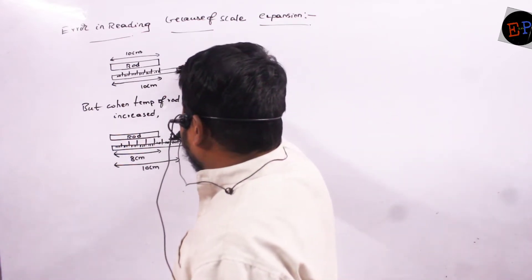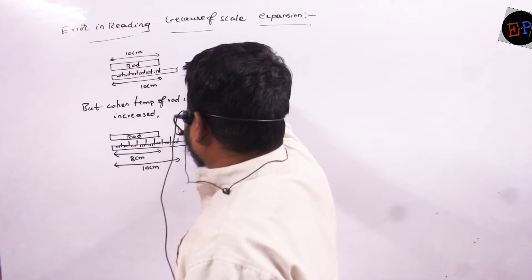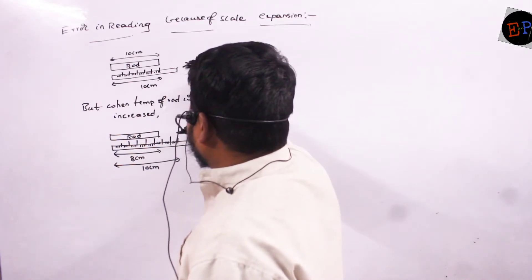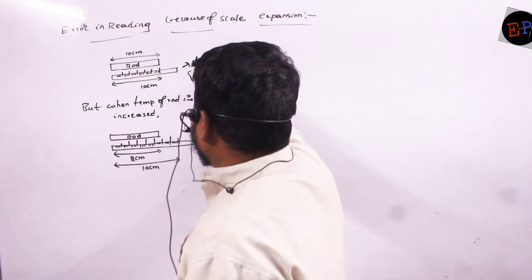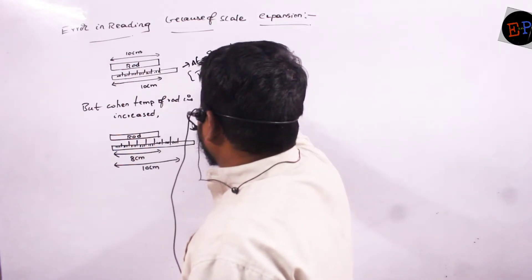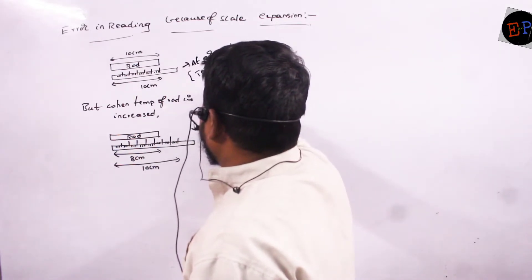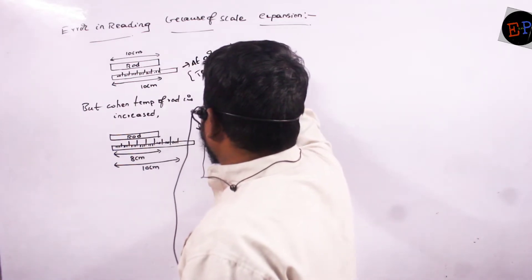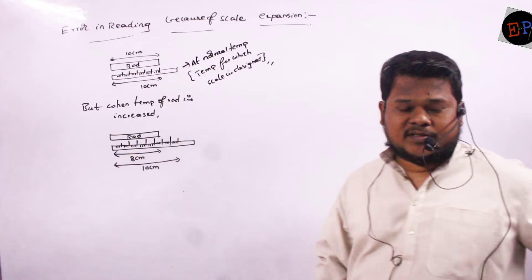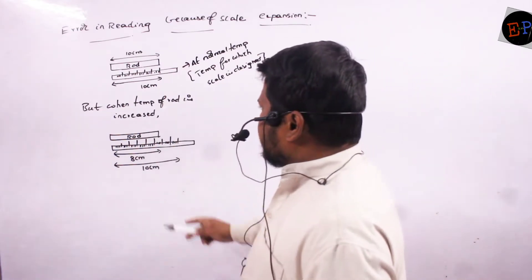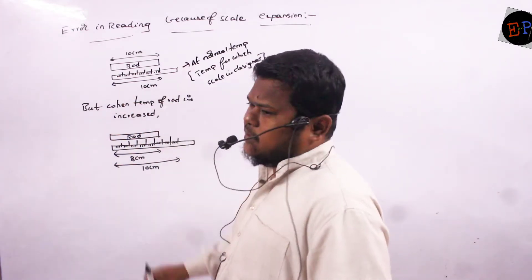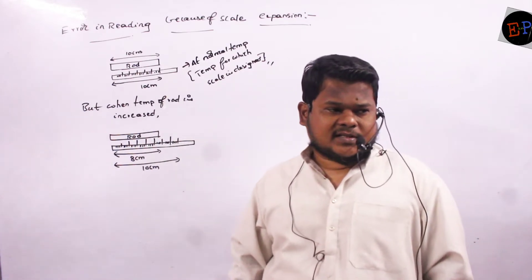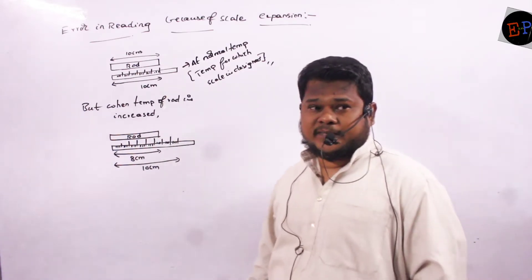This is at normal temperature — normal temperature means the temperature for which the scale is designed. That temperature is called normal temperature. So at that temperature, the scale will give exactly 10 cm of reading and that reading will be exactly correct.